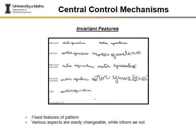Then we have invariant features. A key point is that these are fixed features of the pattern. Some things are easily changeable in GMPs, but others are not — and these invariant features are the things that are not easily changeable.